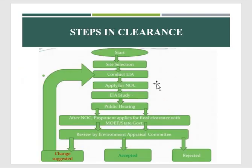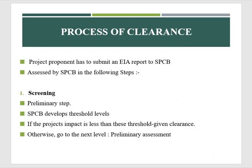Moving on to the steps in the clearance process: the project proponent submits a report assessing the impact of the project on the environment — the EIA — to the State Pollution Control Board (SPCB), for which it hires a consultant. The first step is screening, the most preliminary step. SPCB has records and data of past project impacts, based on which it develops threshold levels of impact intensity. If the project impact is less than these thresholds, clearance is given straight away; otherwise the proponent moves to the next level — preliminary assessment.